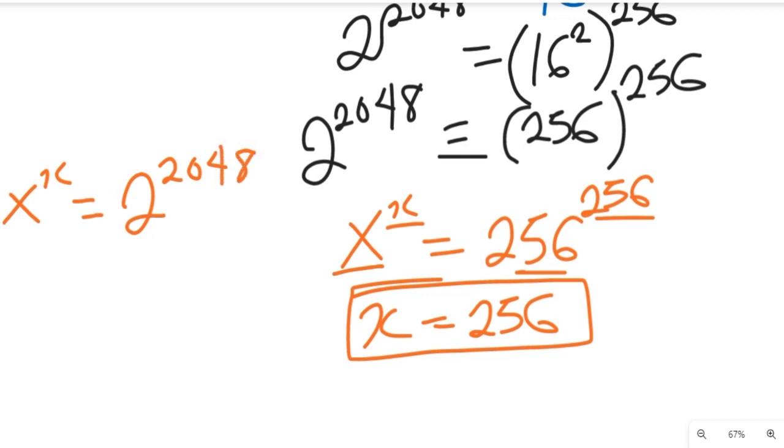Now, x to the power of x is equal to 256 raised to the power of 256.